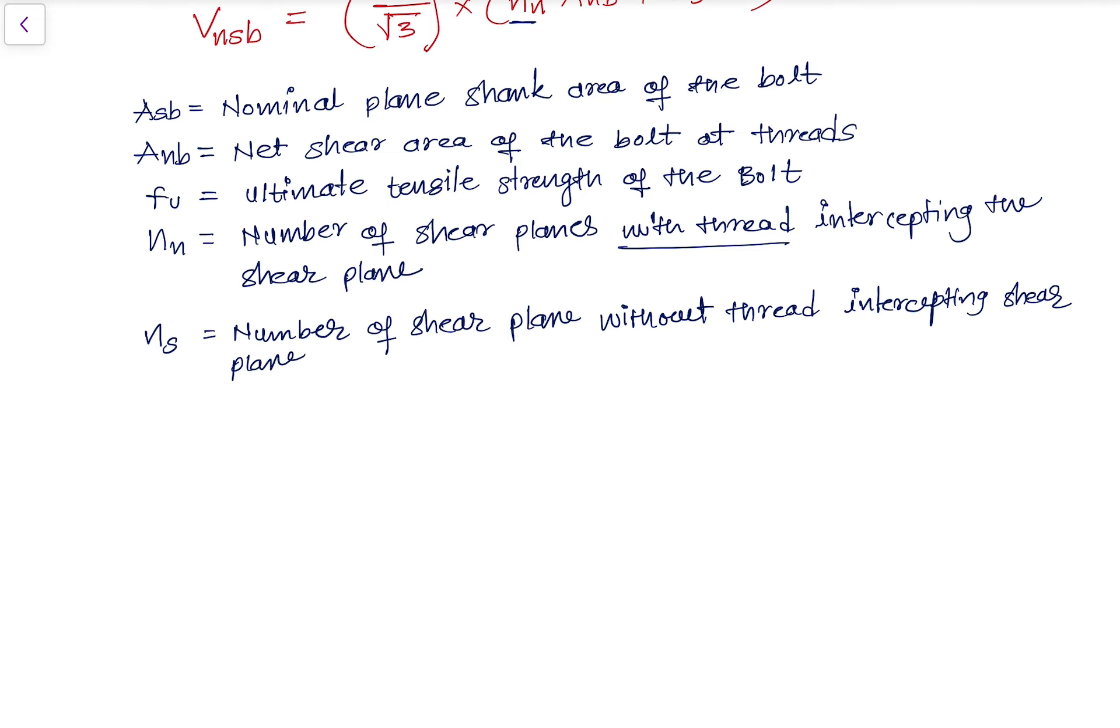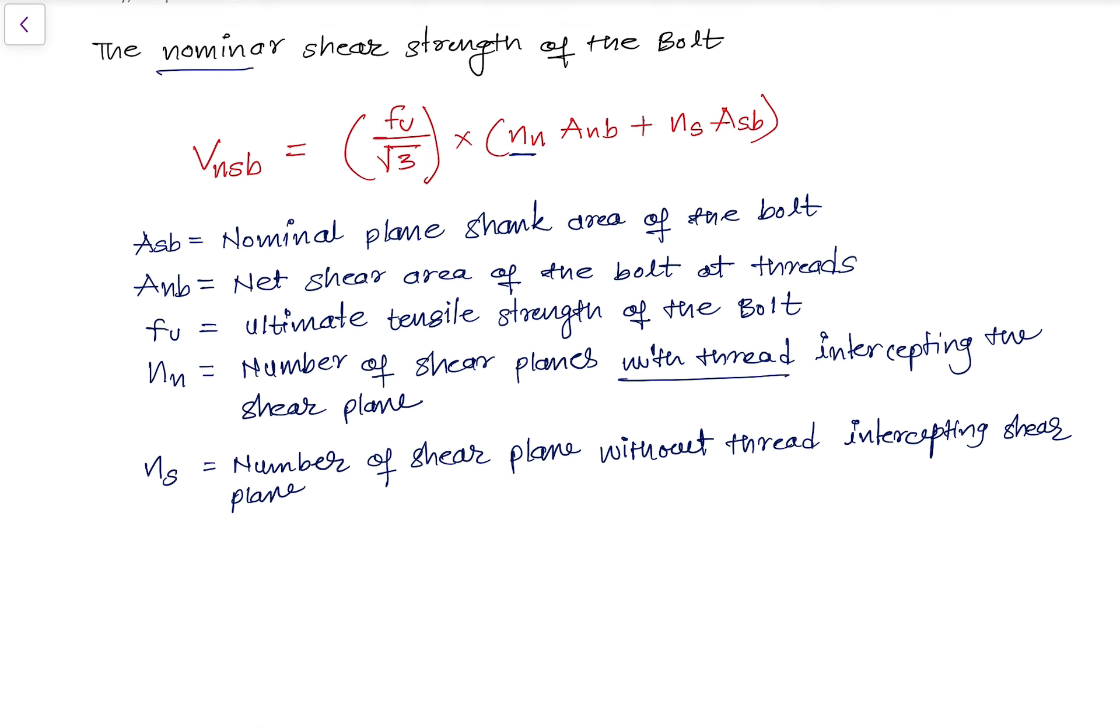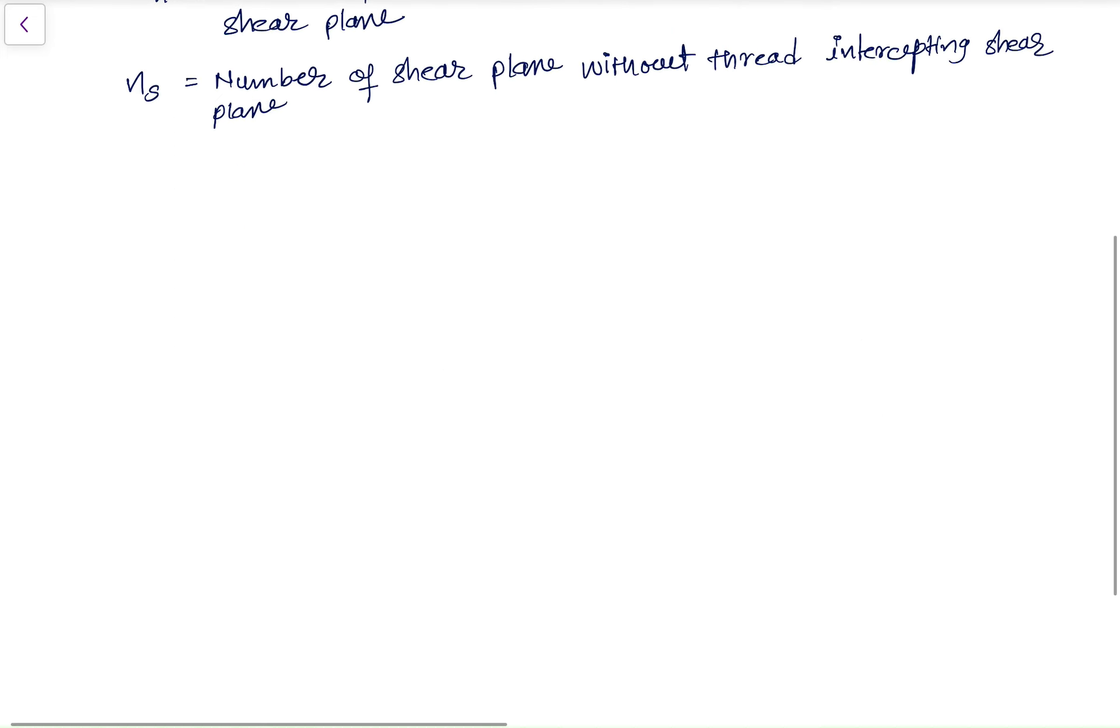Now, this is what we have calculated for the nominal shear strength. When we want to understand how we can identify the design shear strength of a bolt, we have a different formula. Design shear strength of a bolt is given by V_dsb.